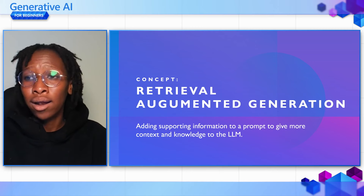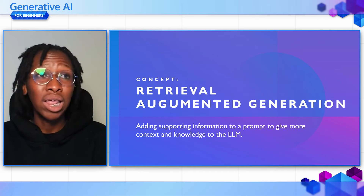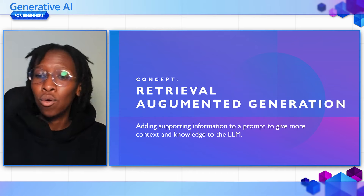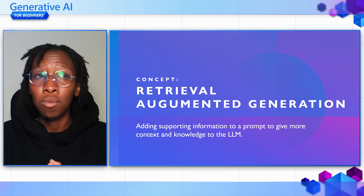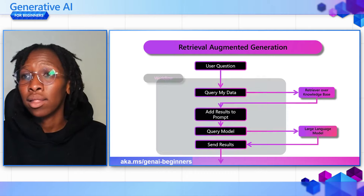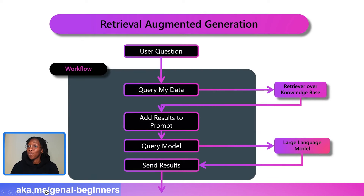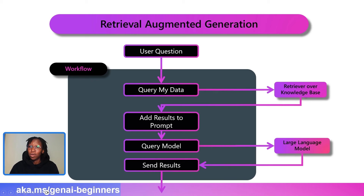With these limitations in mind, we have the solution of using Retrieval Augmented Generation. This is whereby you add supporting information to a prompt to give it more context and knowledge so that when you go to the LLM it can give you responses based on the data provided. How it works: the application acts on a user's question and queries data from a knowledge base, adding the data as well as your query to all the prompts that you send to the model.